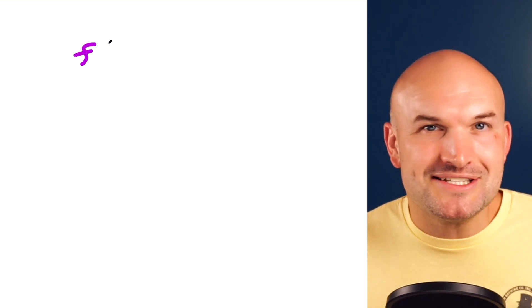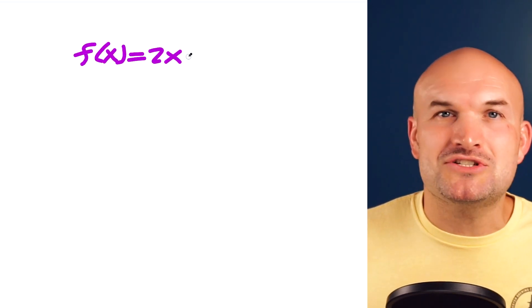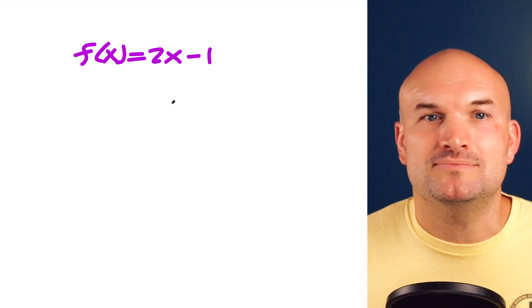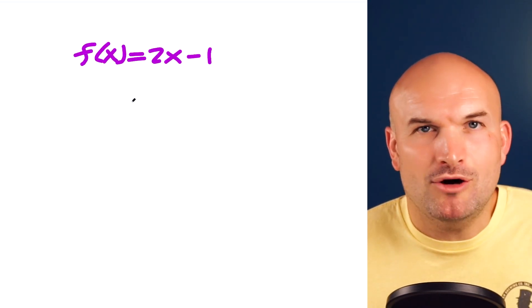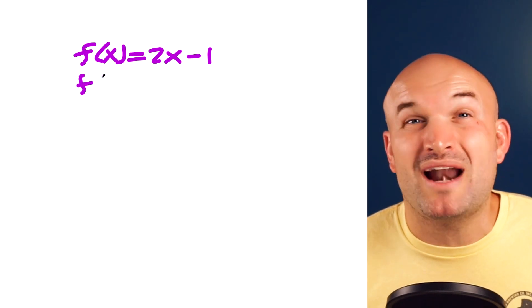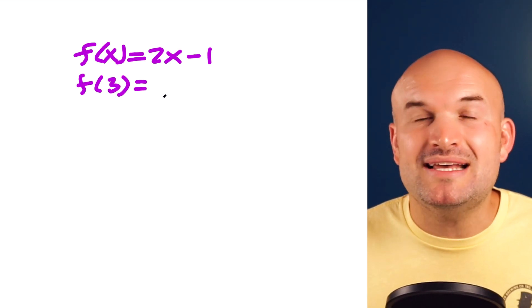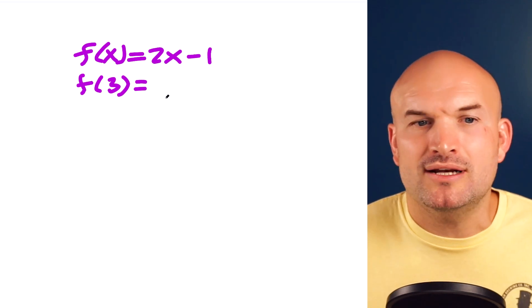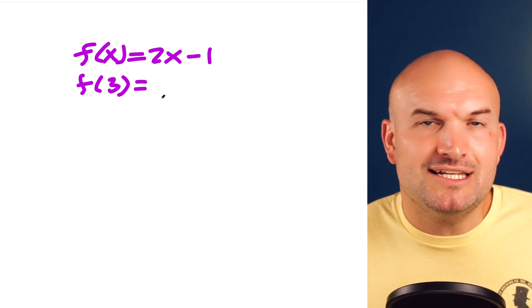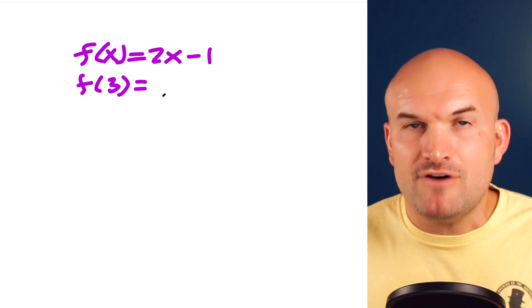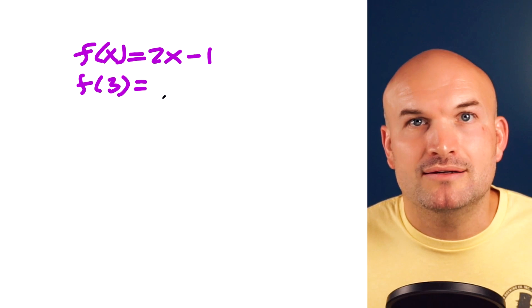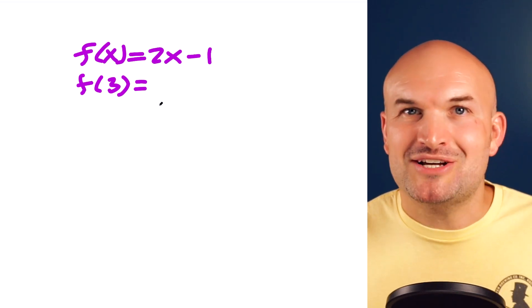Let's go ahead and start off with a simple function before we actually get into the limits. Let's start with a function f of x equals 2x minus 1. What I want to do is go back to just saying, how do we evaluate for f of 3? To evaluate the value of a function, all we simply need to do is plug in that value into the function and simplify — also known as plug and chug.